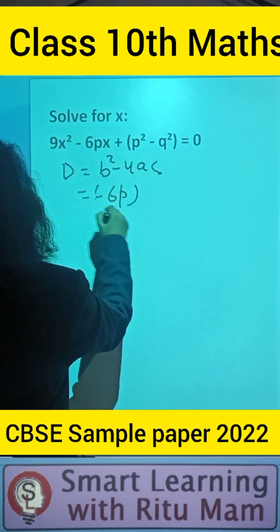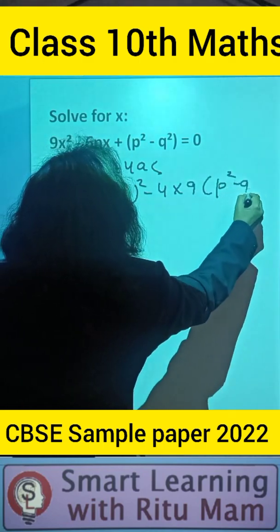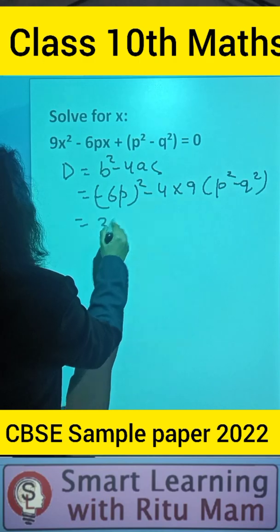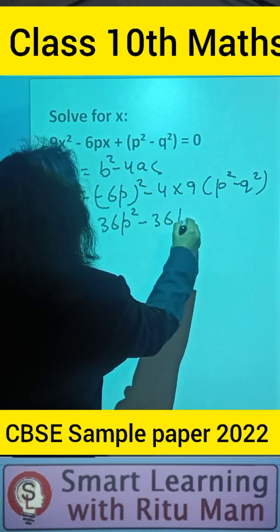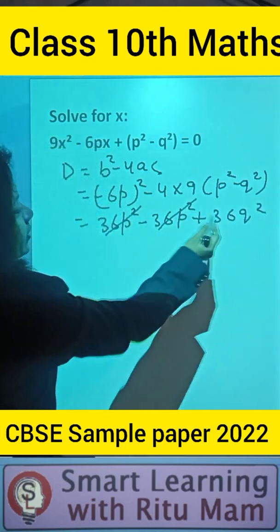Yes, it is -6p² - 4 × 9 × (p² - q²). Solving this gives us 36p² - 36p² + 36q², so from here you get D.